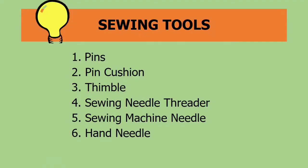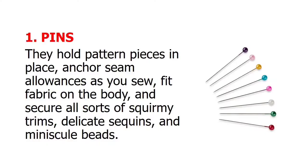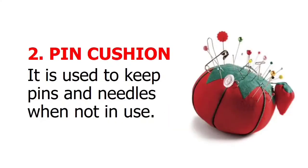Next, let's have the different sewing tools — we have 6. First, pins: they hold pattern pieces in place, anchor seam allowances as you sew, fit fabric on the body, and secure all sorts of trims, delicate sequins, and minuscule beads. Second, pin cushion: it is used to keep pins and needles when not in use.